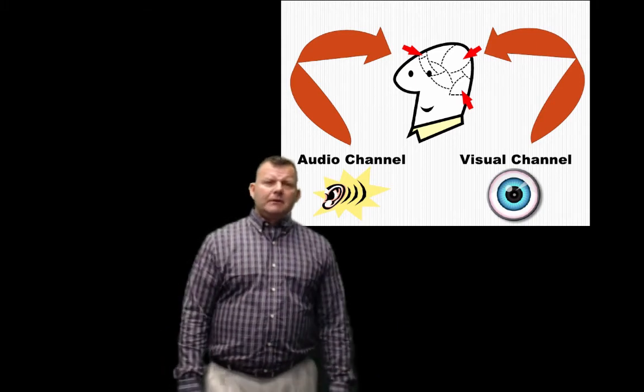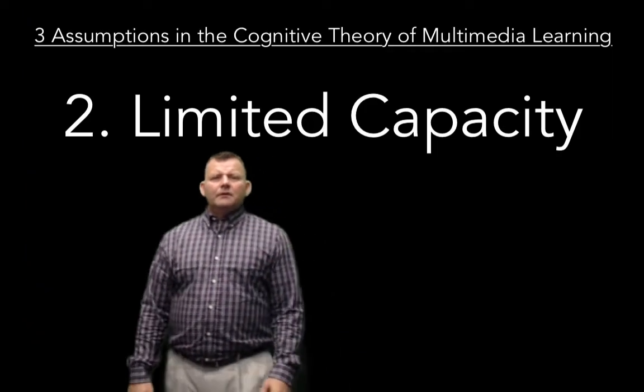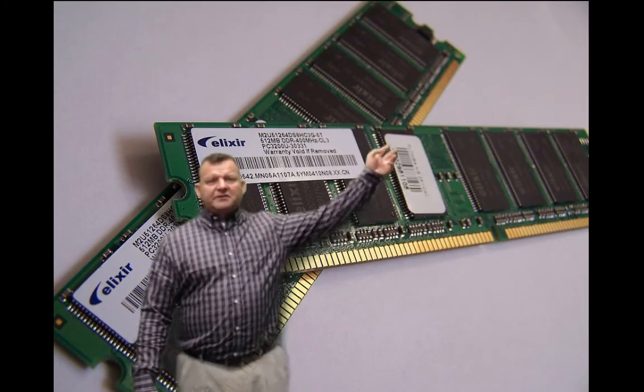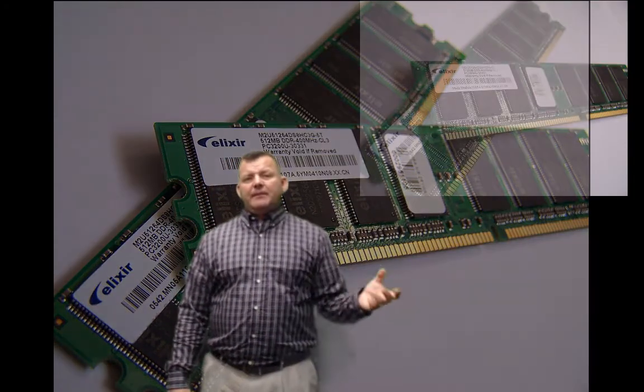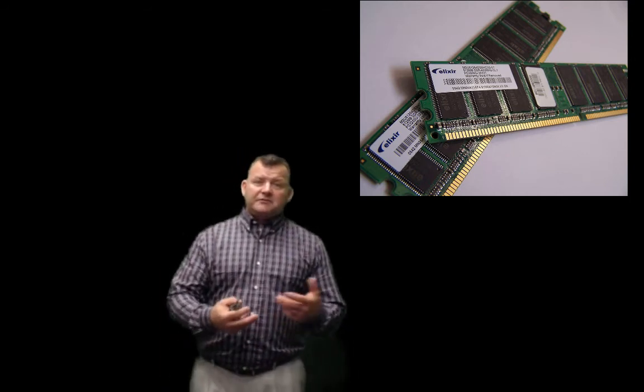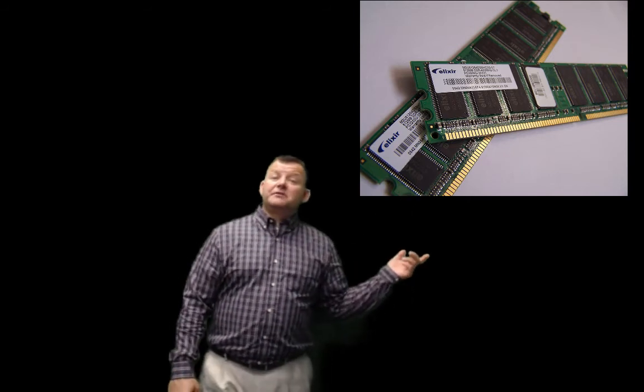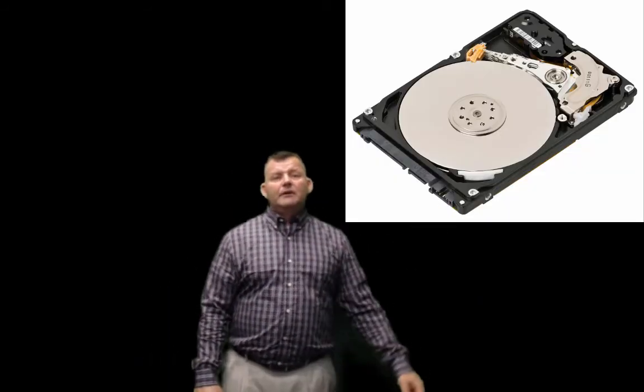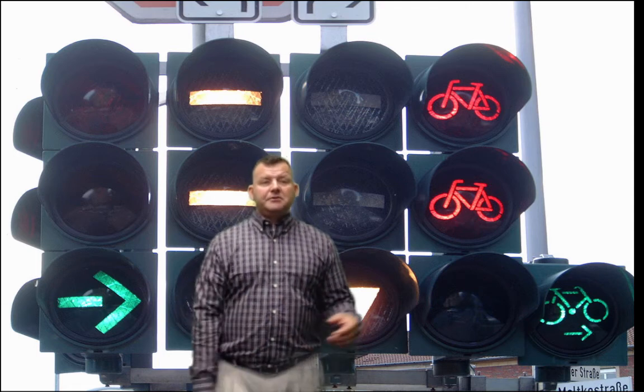Think about listening to two different radio stations at the same time — both coming through an audio channel could be very distracting. Or trying to watch two different things simultaneously — they may interfere and be counterproductive. The second assumption is limited capacity. RAM in a computer is analogous to working memory — it handles active processes and eventually saves items to long-term memory, like a hard drive. People have a limited amount of space and time to handle information, and we must be conscious of that limited capacity.